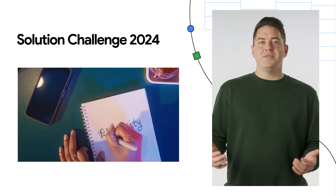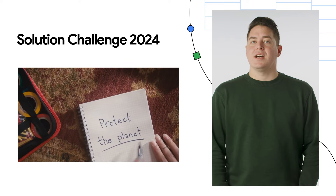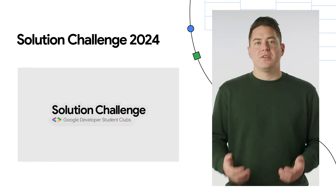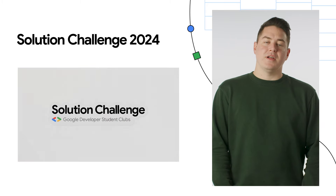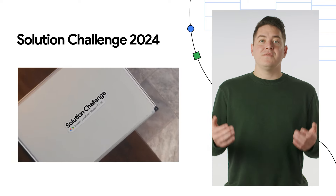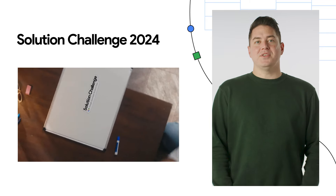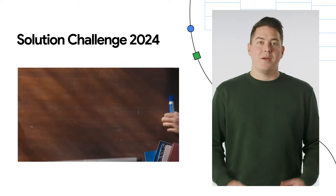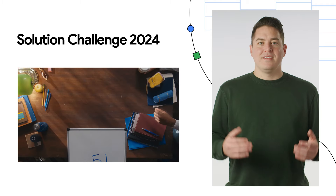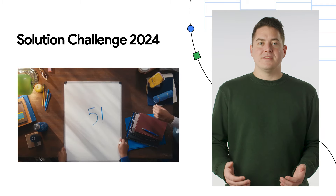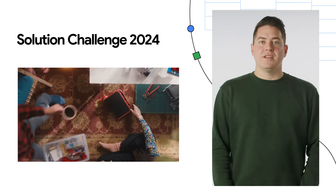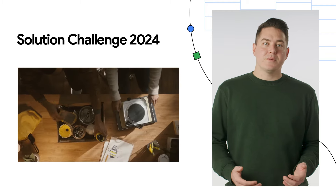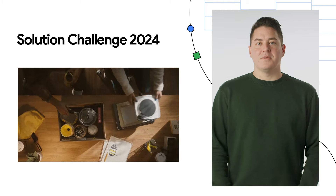If you're a student developer, check out the new Solution Challenge 2024 for using technology to address UN Sustainable Development Goals. This year marks the five-year anniversary of the Google Developer Student Club Solution Challenge, and we're excited to be back. There are some great prizes, and the first hundred winners will be announced in April. Make sure to submit your project by February 22nd at the link below.